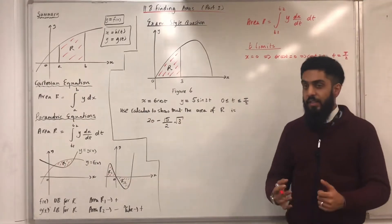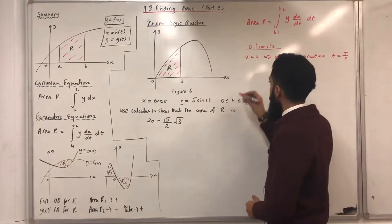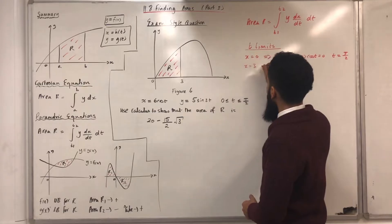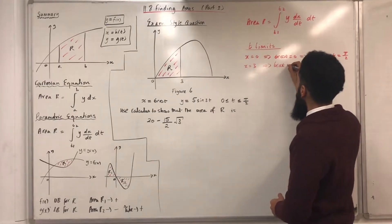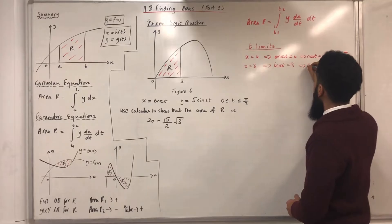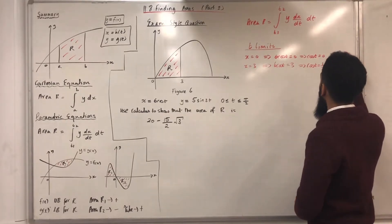The next x limit, ladies and gents, is x equals 3, which implies that 6 cos t is equal to 3, which implies that cos t is equal to 0.5. Therefore, t is equal pi over 3.